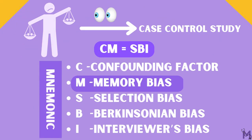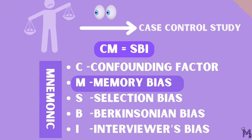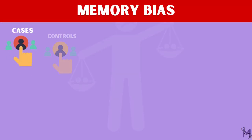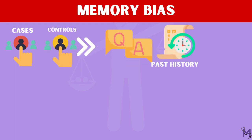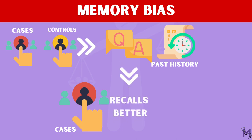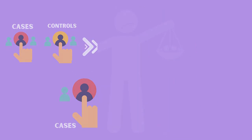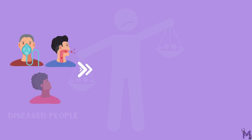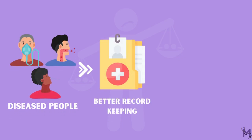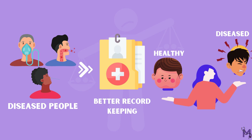The M stands for memory bias. At times, when the cases and controls are asked questions about their past history, it may be more likely for the cases to recall the occurrence of certain events compared to the controls, who are healthy people. This is because diseased people have a better track of keeping hospital records compared to healthy people, since visits aren't as frequent.